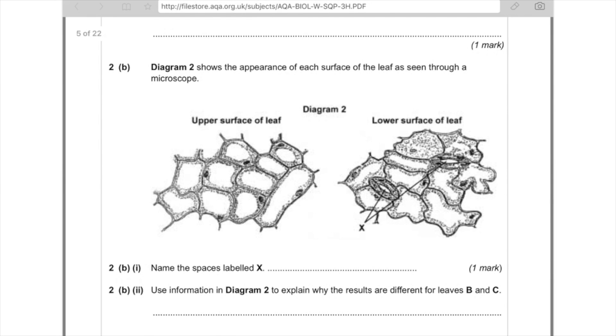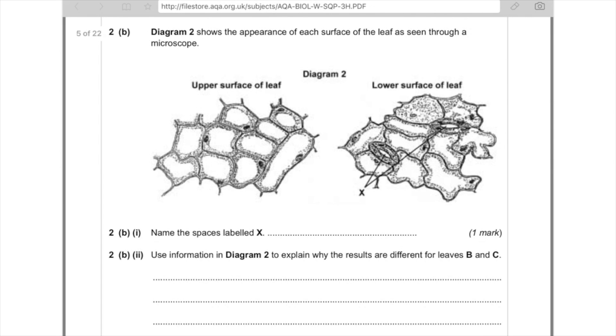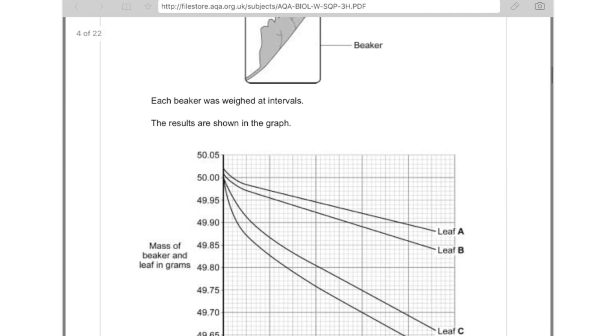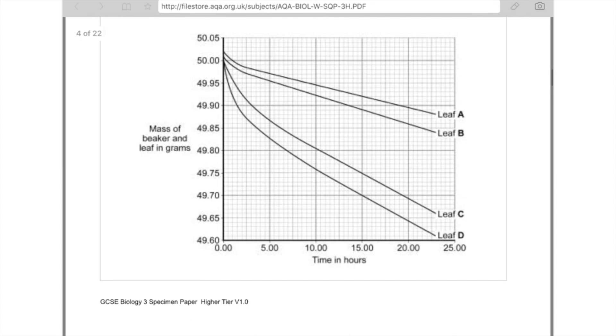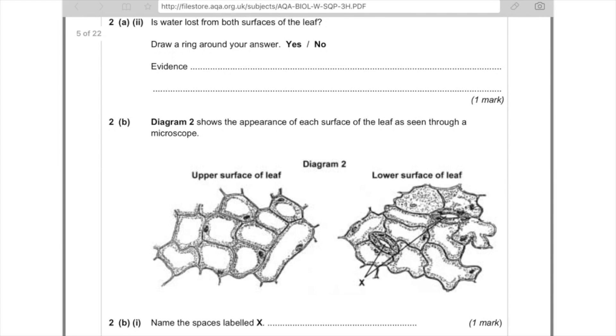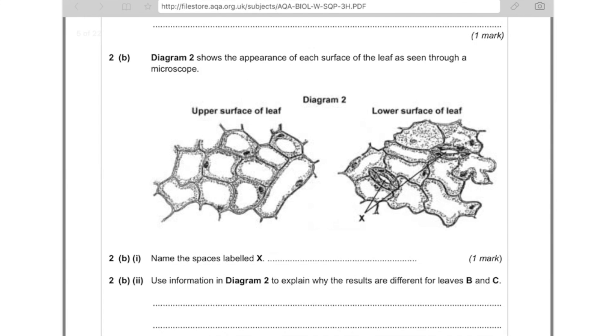Use information in diagram 2 to explain why the results are different for leaves B and C. That's worth two marks. So you want to say, let's make sure we're talking about the right one. Leaf B was on the lower, the Vaseline was on the lower surface only. So you're going to say here, the results are different because in leaf B there was Vaseline on the bottom of the leaf, and that meant that the stomata were blocked, which means less transpiration occurred, which means less mass was lost. Whereas on leaf C, only the upper surface was blocked, which meant that all the stomata were still present on the lower surface, which meant lots of transpiration could take place.